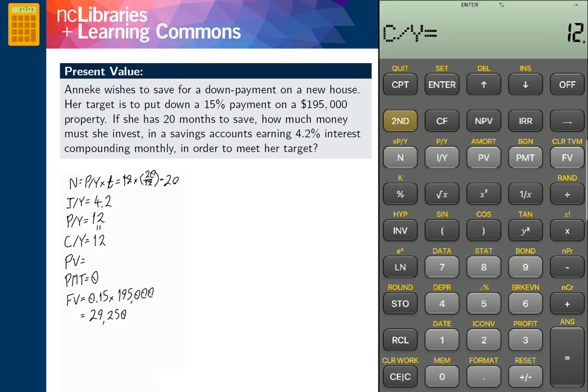Clear work, and we enter 0 for PMT, and 29,250 for our future value, FV.